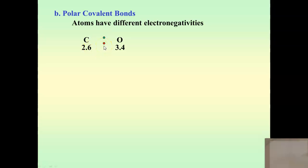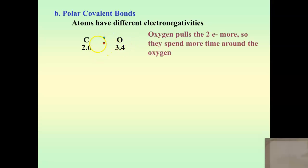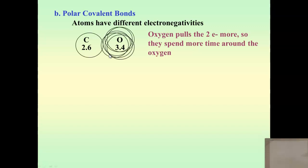If we started marking where the electrons exist at a particular time, we would see that the oxygen spends more time with those two electrons and the carbon has less time with them. The electrons are moving mostly around the oxygen, but once in a while go back to the carbon — spending most of their time around the oxygen. So the oxygen has the electrons more often, and the carbon has lost the electrons, not all the time, but more often.